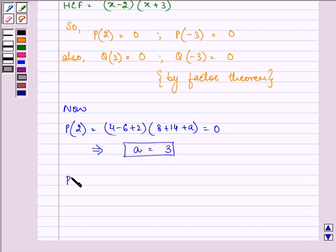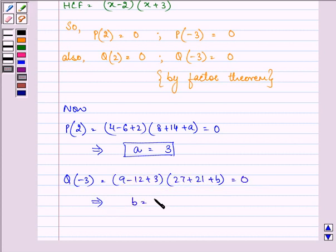And when we have the value of x as -3 and we substitute this value in Q, we have (9-12+3)(27+21+b) = 0. This implies that the value of b is coming out to be 2.